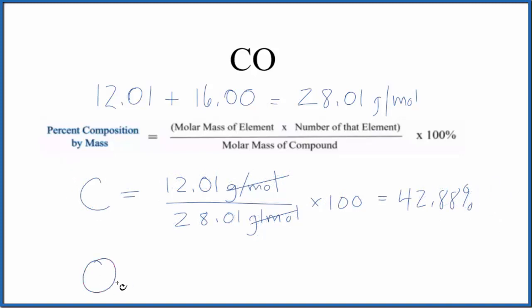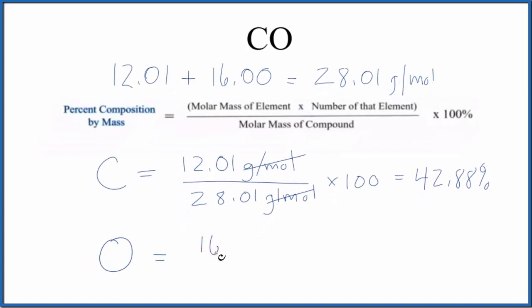For the oxygen, oxygen on the periodic table, 16.00 grams per mole. I won't write it since it cancels out. The number of oxygen atoms, again we only have one, so we'd multiply that by one, divide by the molar mass of the compound, multiply by a hundred,